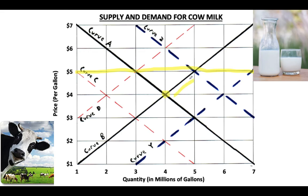Let's say we have an increase in demand — curve A shifts to curve Z due to population growth — and simultaneously a leftward shift in supply from curve B to curve D because some dairy farms close. Together, those shifts push the new free-market equilibrium price to $6 a gallon, where curves Z and D intersect. But if the government had a price ceiling of $5 a gallon, that ceiling now becomes binding and will cause a shortage. That covers the supply and demand curves and how they interact. If you have any questions while working on your assignment, feel free to get in touch.